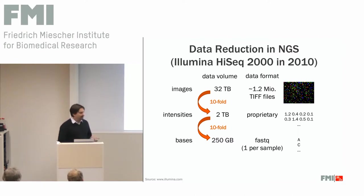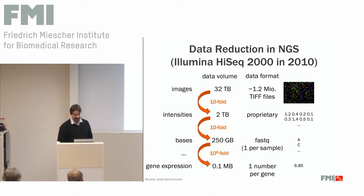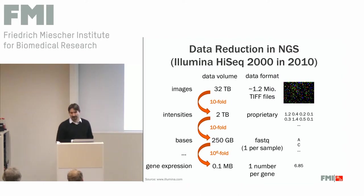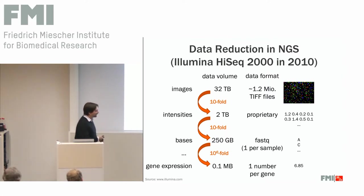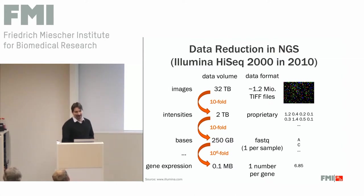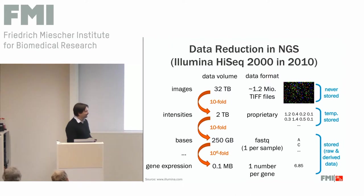And finally, that's the raw data that I get. When we do our analysis, it's typically again a strong reduction of the data. For example, we align those reads to a reference genome and then just count the number of reads we get for a given gene to calculate one value, which is the expression level of a gene. So thanks to this data reduction, we are actually not struggling with data issues so much anymore.